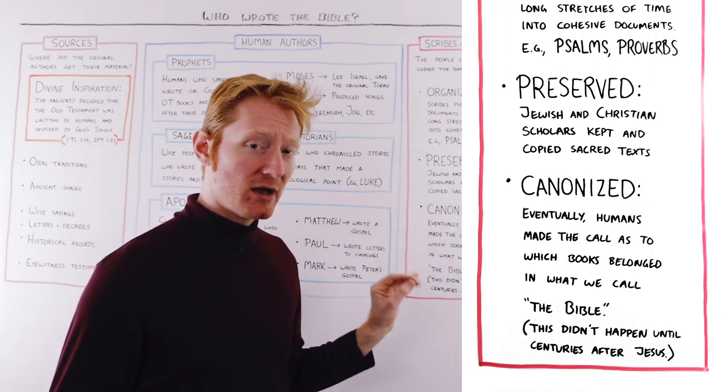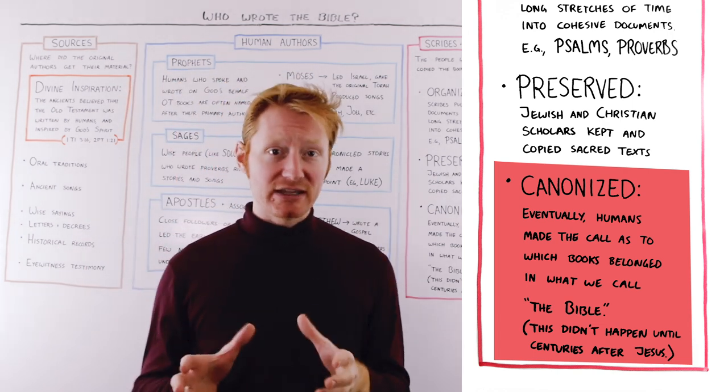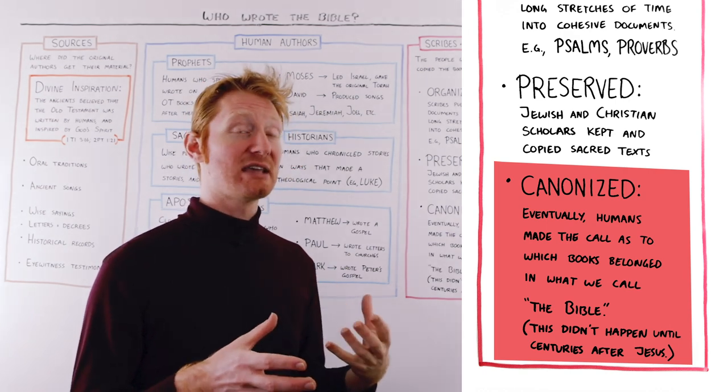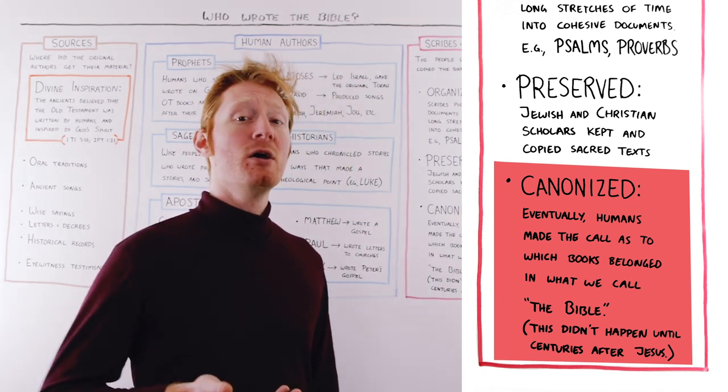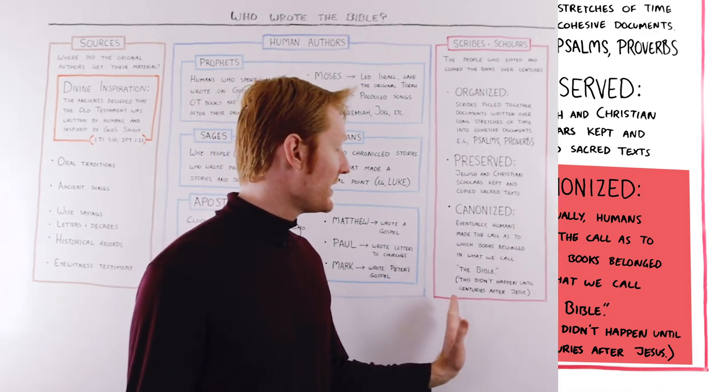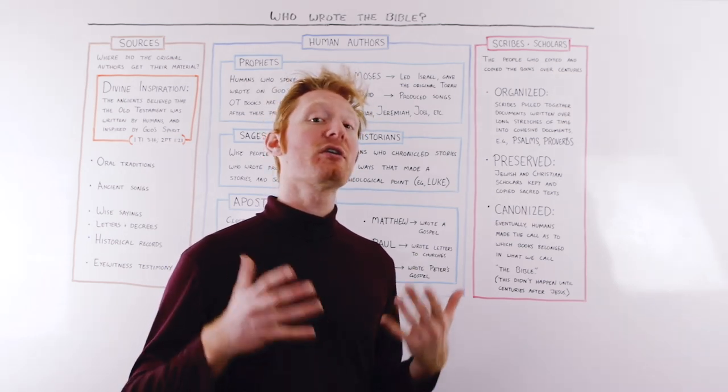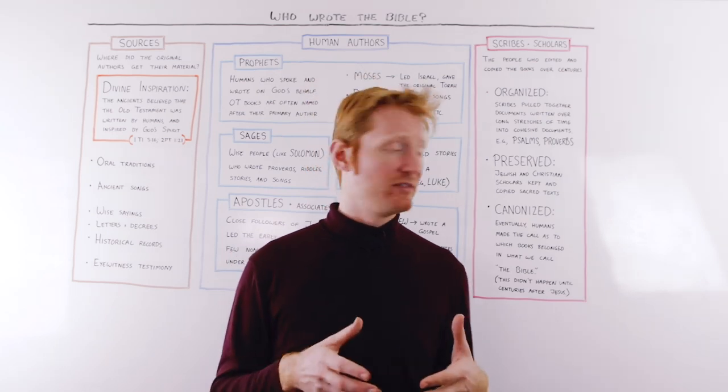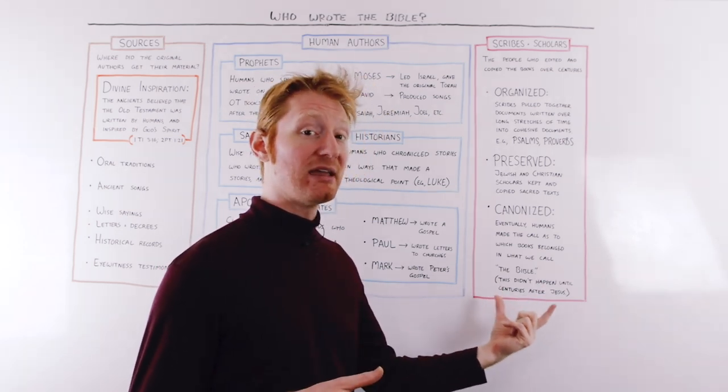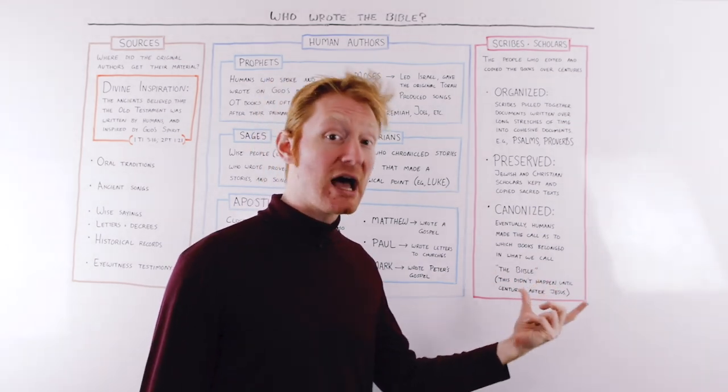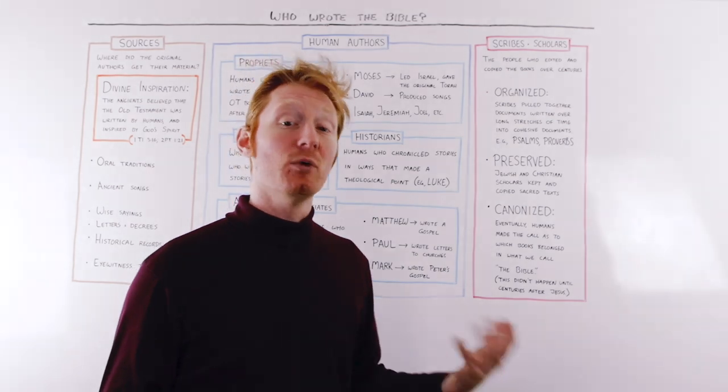However, the third thing that we want to look at when we talk about scribes and scholars is how they canonized the books of the Bible. Eventually, Christian leaders made the decision to say some books belong in the Bible. These books are sacred scripture. And obviously, that was not a decision that was taken lightly and not one that happened very quickly. It didn't happen until centuries after Jesus that the leaders of different Christian traditions said, these are the books that we believe belong in our Bible, that have demonstrated value and cohesion and something that we believe is sacred and useful, not only for the church of their time, but had been useful for the church in the centuries leading up to their time. They believed would be useful for as long as Christianity would be a thing.